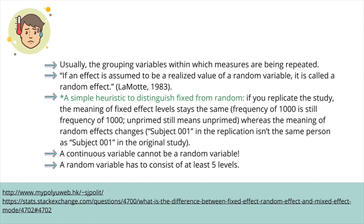A continuous variable cannot be a random variable — random variables are almost always categorical. Another technical point is that random variables should consist of at least five levels, because with fewer levels it's really difficult to reliably measure the variance among them. So a golden rule is to go for random effects which have at least five levels.